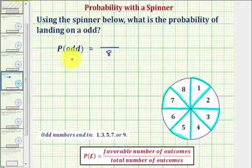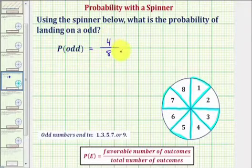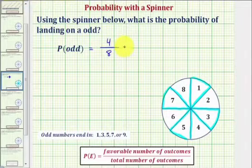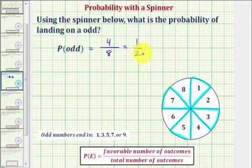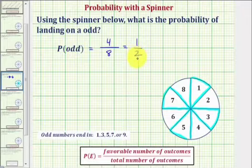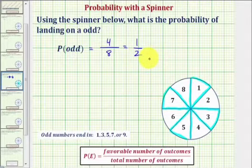Which means the probability of spinning an odd is four-eighths. But this does simplify — there's a common factor of four. Four-eighths simplifies to one-half. So the probability of spinning an odd is one-half.